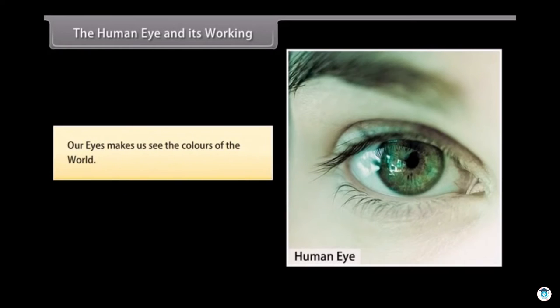Our eyes make us see the colors of the world. Human eye has a crystalline lens and it works like a camera. Various parts of eyes along with their functions are: